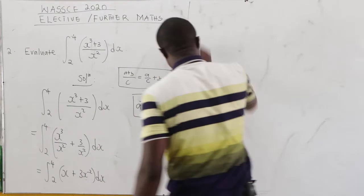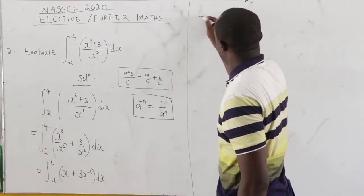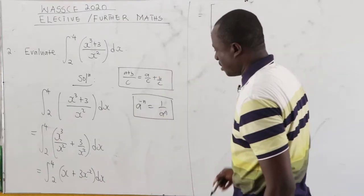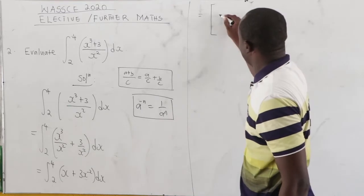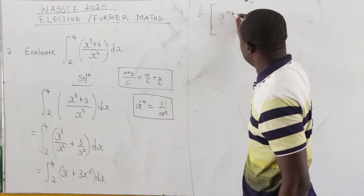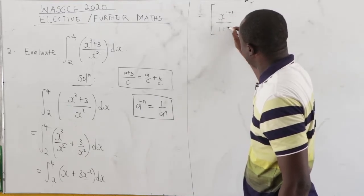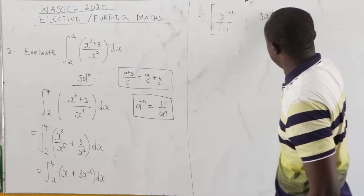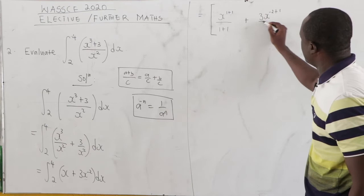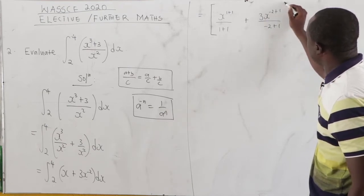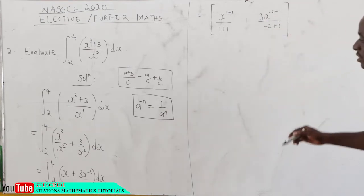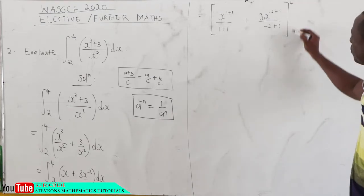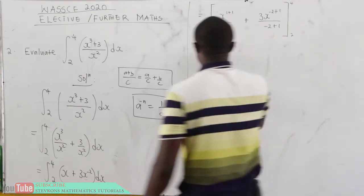Now from here, I can integrate. Now when I integrate, we have x, so that will be x to the power 1 plus 1 all over 1 plus 1. Then plus we have 3x negative 2 plus 1 all over negative 2 plus 1. And then our limit of integration, that is, we have 4 to 2.